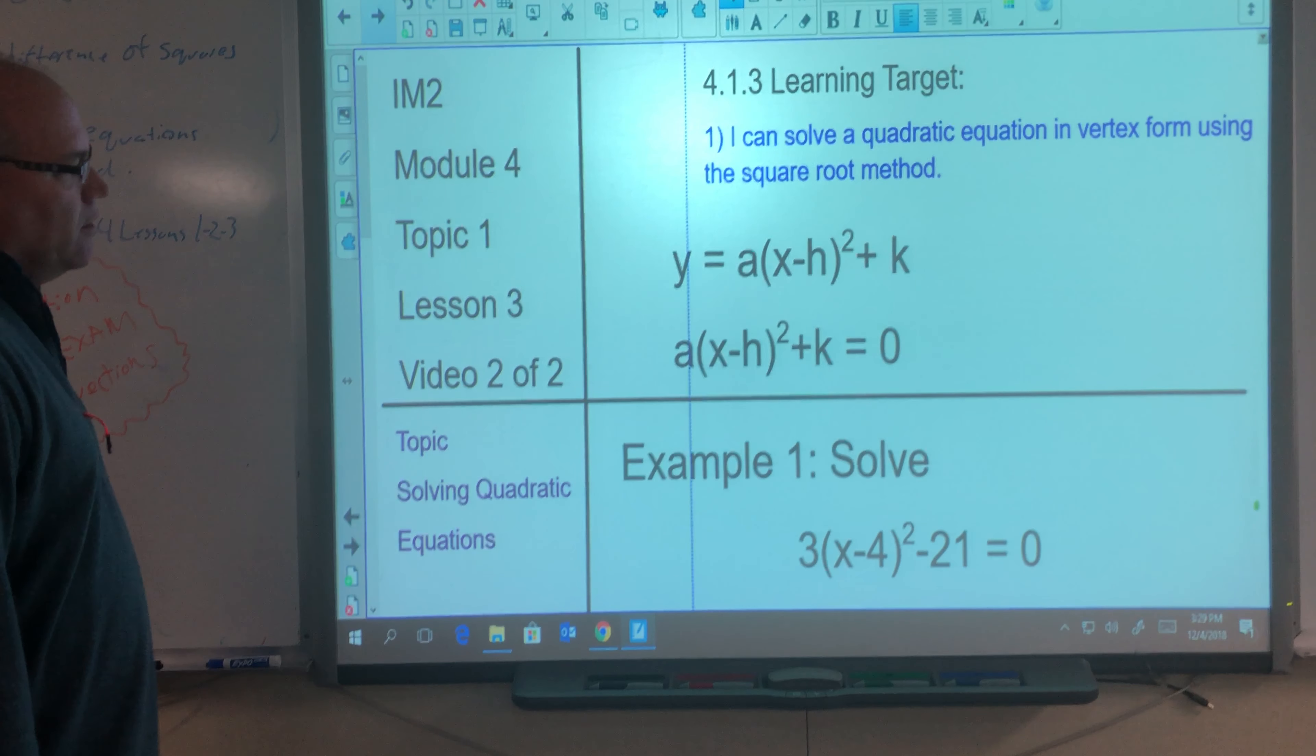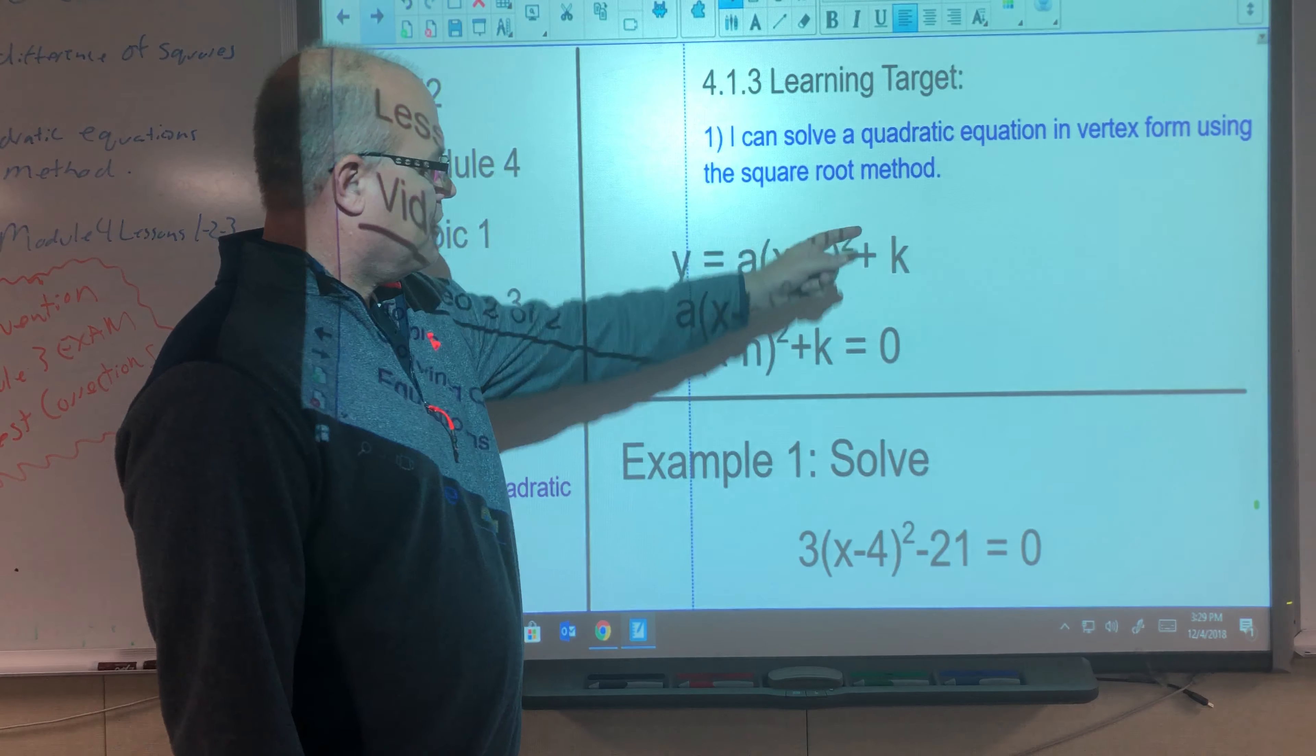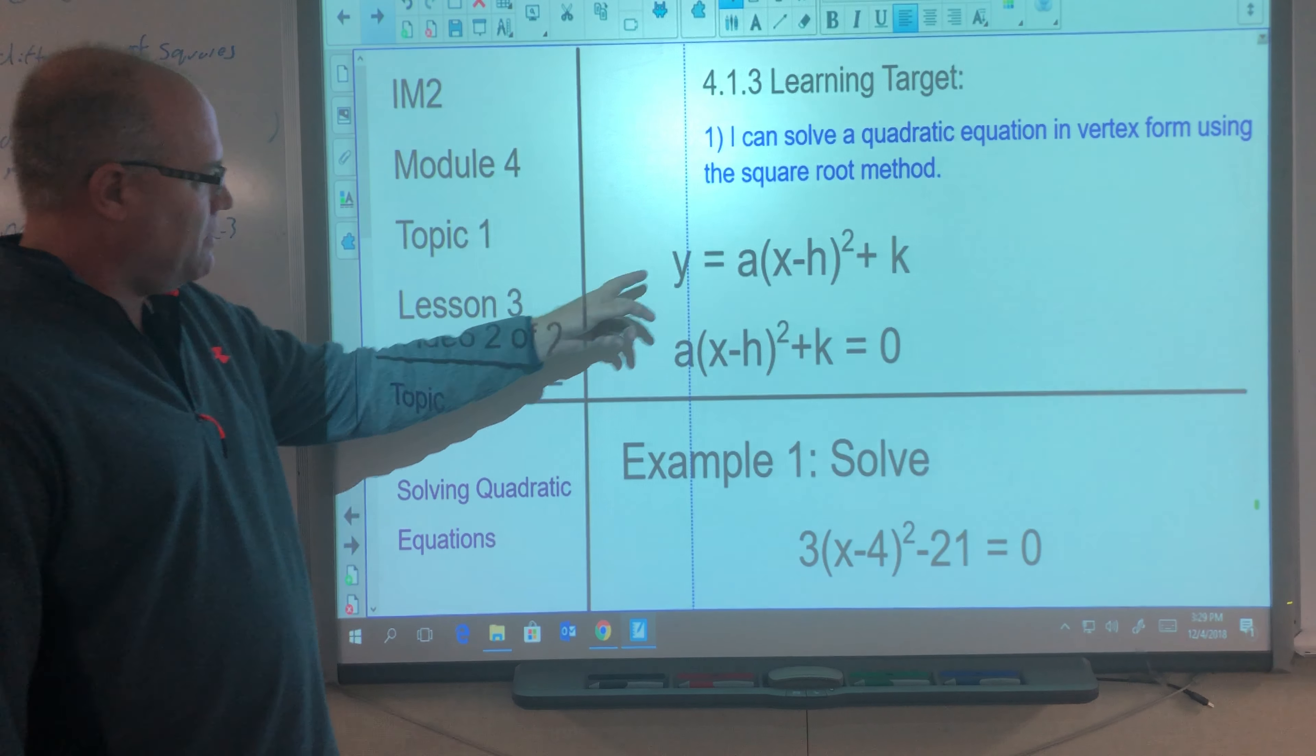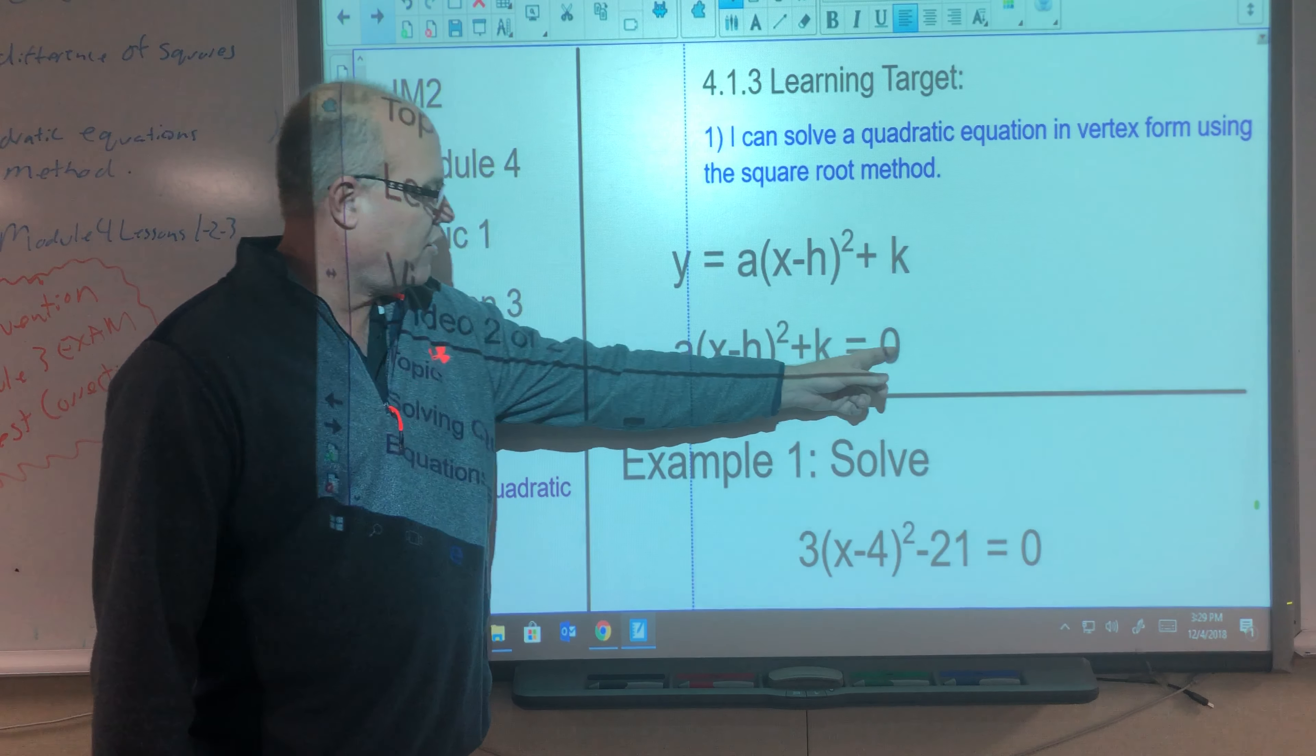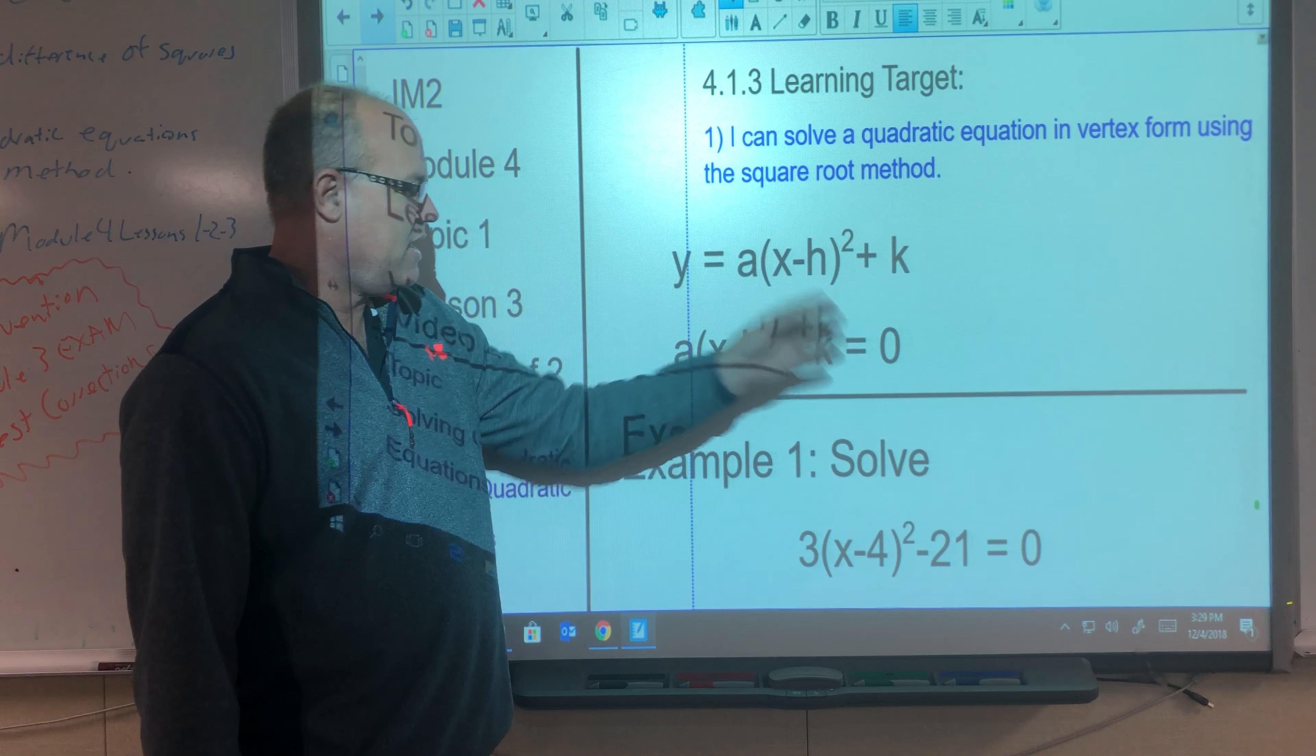So we know vertex form is y equals a times x minus h squared plus k, and when we have our equation it's going to be equal to 0. So y is 0, so I just replaced y with 0, so it's a times x minus h squared plus k equals 0.